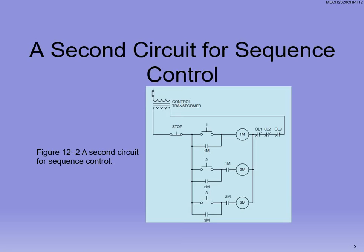We can also do something similar this way. Notice the difference — it's really where we've placed the contactors for 1M and 2M. We're still keeping 1M in parallel with push button 1 for the seal-in logic. But now, after push button 2 and before motor 2M, we've placed a contactor for 1M. That contactor will not close unless motor coil 1M is actually energized. Likewise, on the bottom line we put a normally open contactor for 2M in the 3M motor coil circuit, so 3M will not energize unless 2M is closed and push button 3 is closed as well.